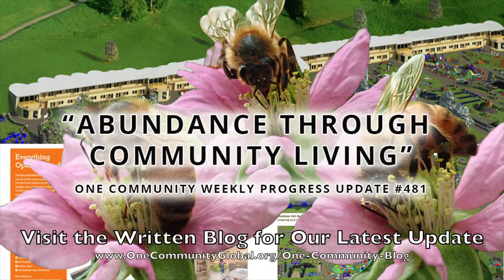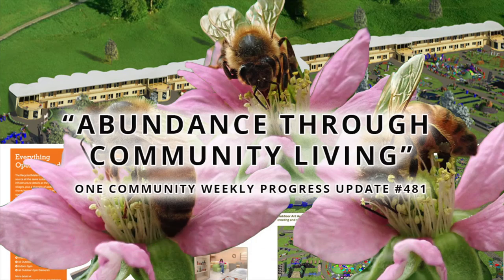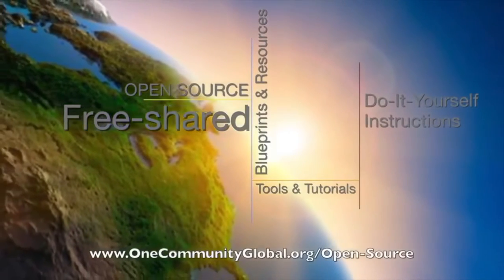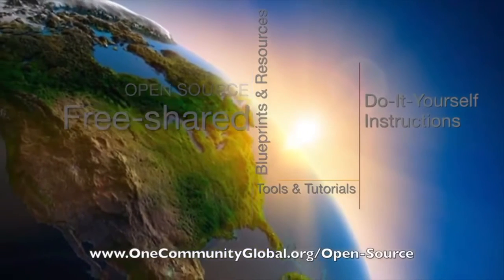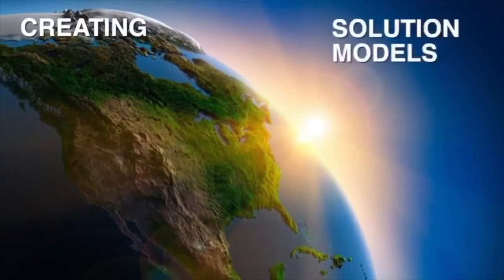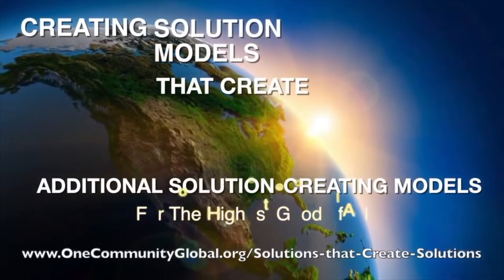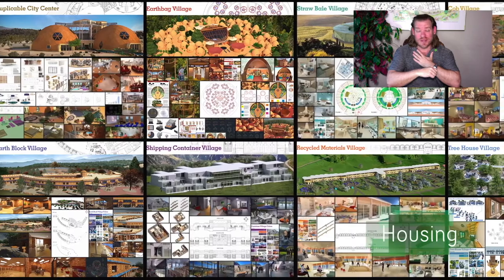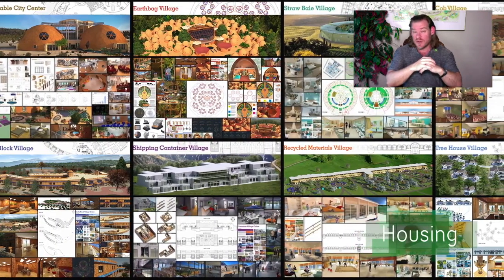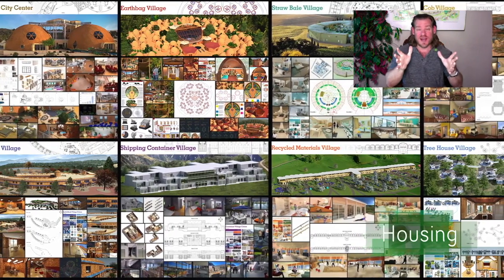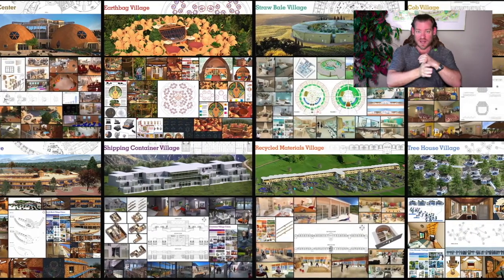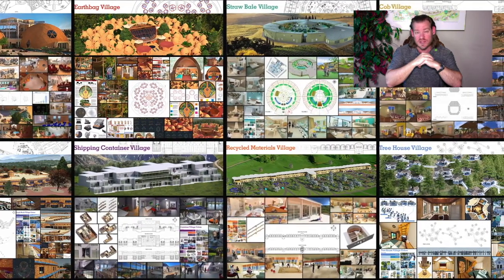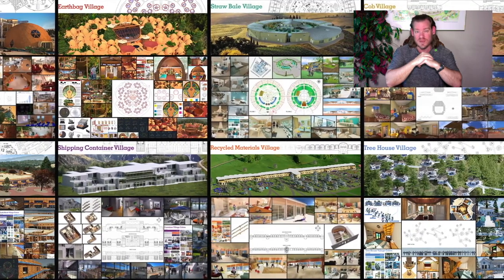Abundance through community living. One Community Weekly Progress Update number 481. One Community is a 501c3 non-profit organization creating open source and free shared blueprints, resources, tools, tutorials, and do-it-yourself instructions for highest good living — creating solution models that create additional solution-creating models in the service of all life on this planet. My name is Jay Sable, Executive Director of the One Community 501c3. This is our June 12, 2022 edition, and today's topic is Abundance through community living.